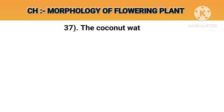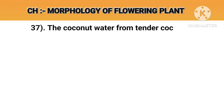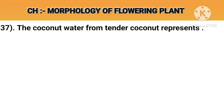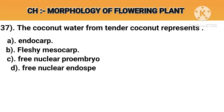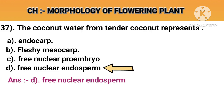Question number 37. The coconut water from tender coconut represents. Option A: Endocarp. Option B: Fleshy mesocarp. Option C: Free nuclear proembryo. Option D: Free nuclear endosperm. Answer D: Free nuclear endosperm.